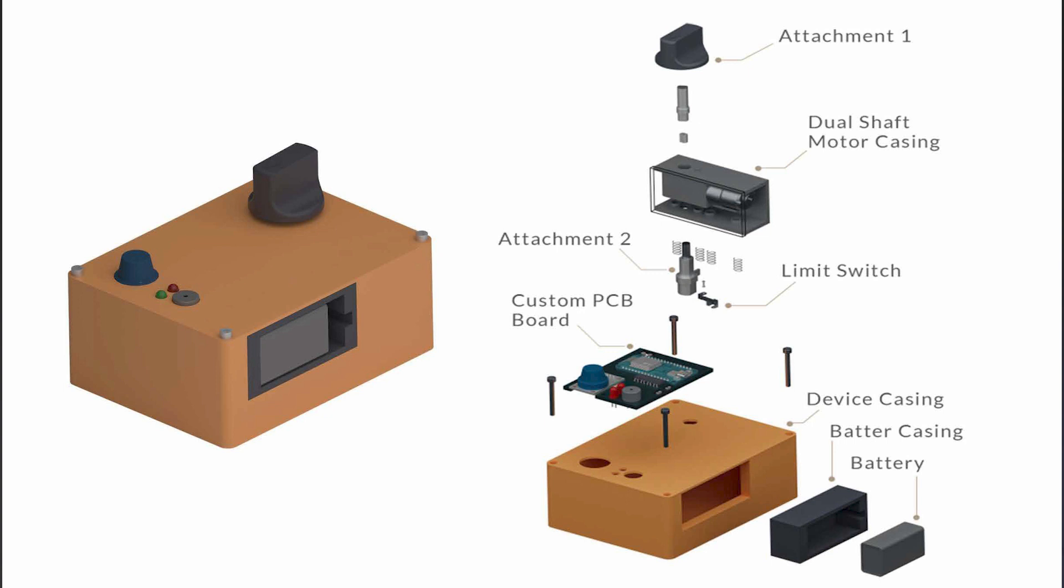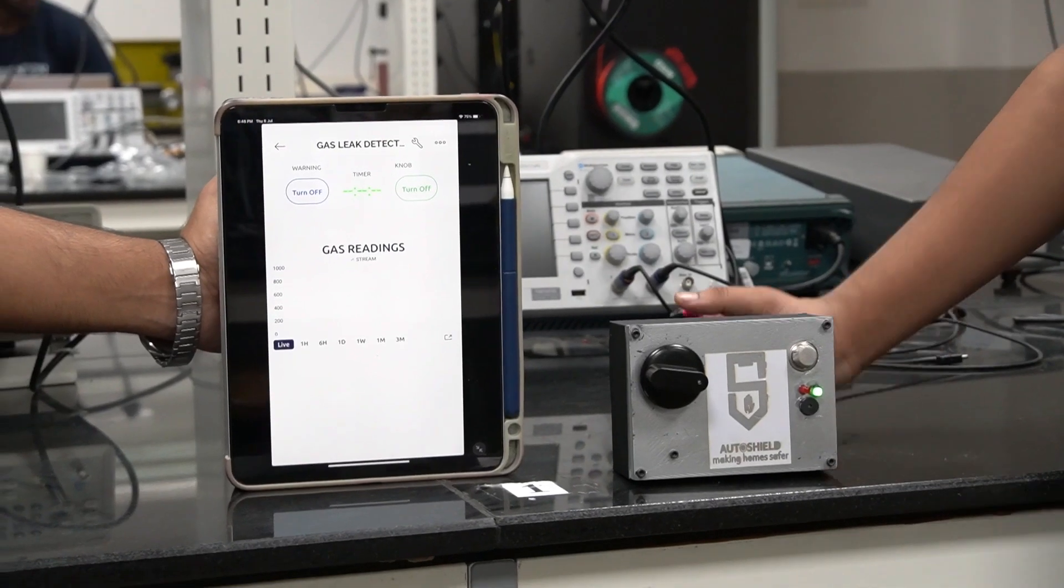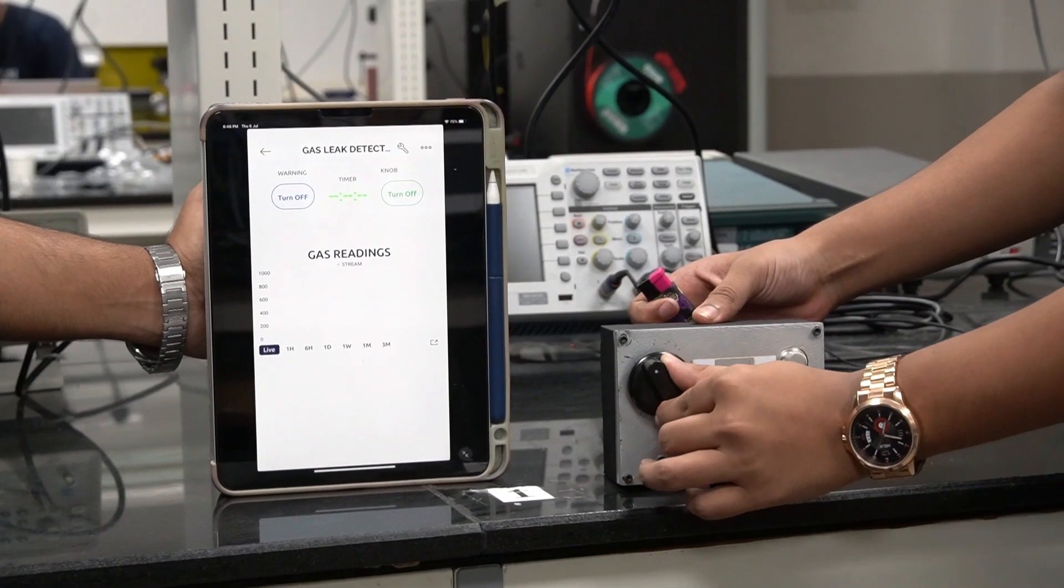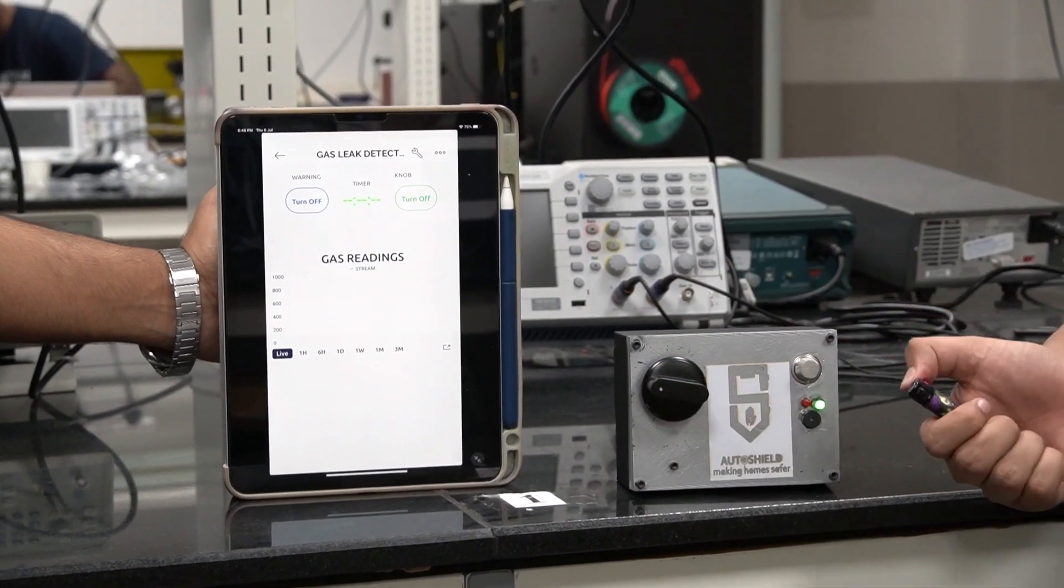For added safety, we have integrated a ratchet and pawl mechanism that swiftly shuts down the knob in case of any mishaps. But we didn't stop there. We wanted to give you complete control over your gas stove.